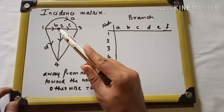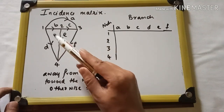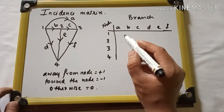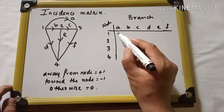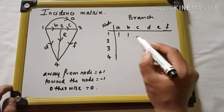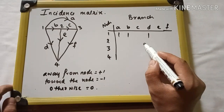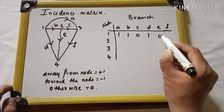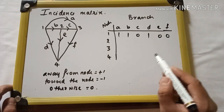For the first node, branches b, a, and d are going away from the node. So for a we write positive 1, b is also going away from the node so positive 1, and d is also going away so positive 1. Branches c, e, and f are not present in node 1, so we write 0.